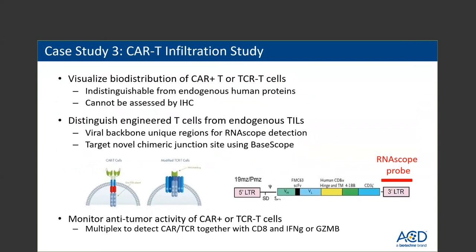CAR-T cells target surface antigens and TCRs target intracellular molecules. Since both are comprised of portions of various human proteins, there is no way to distinguish them from endogenous proteins using antibodies. RNA Scope technology enables visualization of CAR-T or TCR cell distribution in the tumor microenvironment — we were able to see them in tumors, stroma, and normal tissue. Importantly, you can also include co-staining with a marker of activation, like Granzyme B or interferon gamma, to provide an assessment of the activation state of these cells and help monitor the anti-tumor activity.